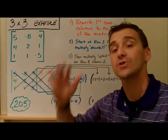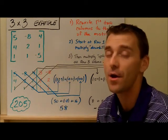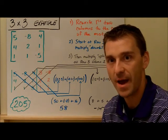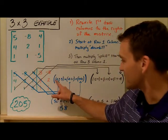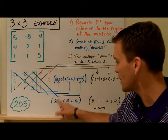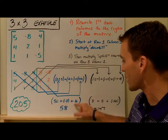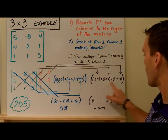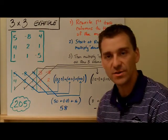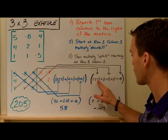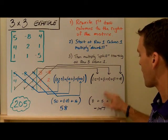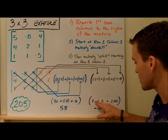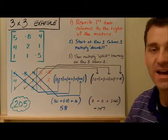So now I just simplify. When I do this: five times two times five gives me fifty; negative eight, one, one gives me negative eight; four, four, one gives me sixteen. Adding those together gives me fifty-eight. For the uphill part: one times two times four gives me eight; one times one times five gives me five; five times four times negative eight gives me negative one sixty. Combining those gives me negative one hundred and forty-seven.